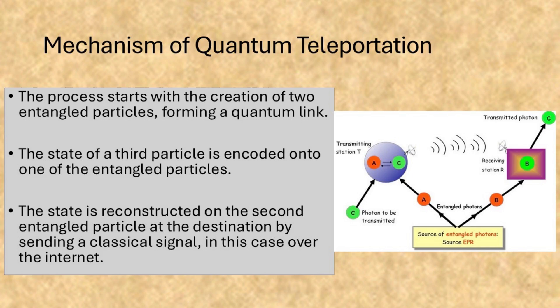The process starts with the creation of two entangled particles forming a quantum link. The state of a third particle is encoded onto one of the entangled particles. The state is reconstructed on the second entangled particle at the destination by sending a classical signal, in this case over the internet.